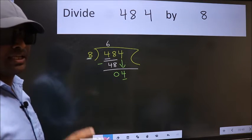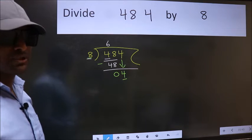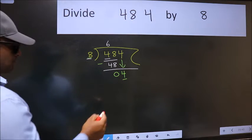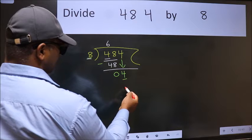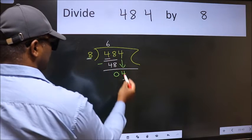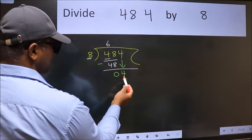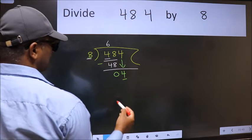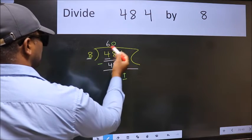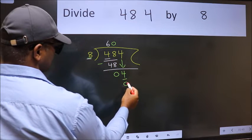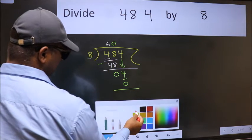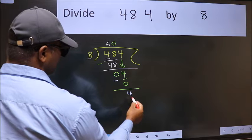Instead of that, what we should think of doing is: which number should we take here? If I take 1, we will get 8, but 8 is larger than 4. So what we do is we take 0. So 8 into 0 is 0. Now we subtract, we get 4.